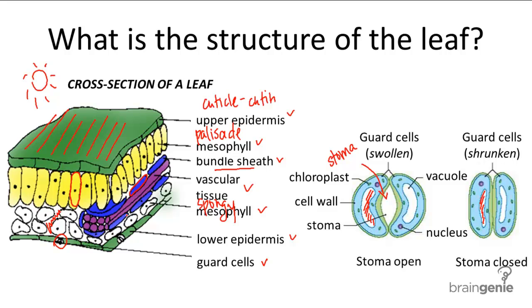So in summary, the leaf is the photosynthetic organ of the plant, and it consists of the cuticle, epidermis, mesophyll, bundle sheath cells, vascular tissue, and the guard cells.